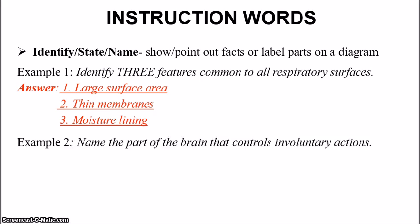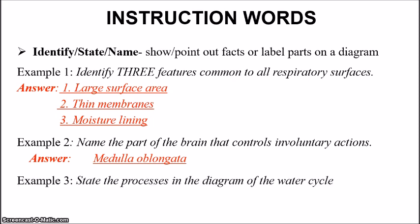Another example: 'name the part of the brain that controls involuntary actions.' That would be the medulla oblongata — just one answer, no explanation. Third example: 'state the processes in the diagram of the water cycle.' I'm going to insert a clip of a past paper question that actually covers this particular question.